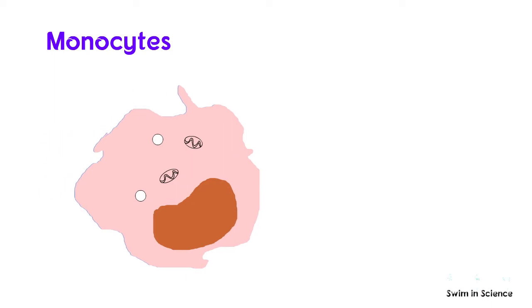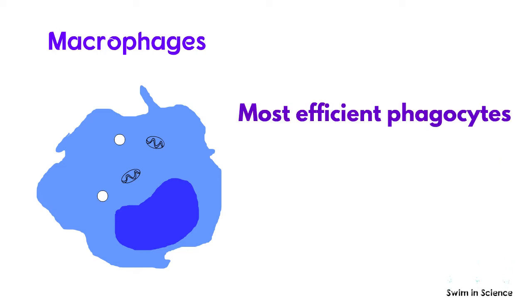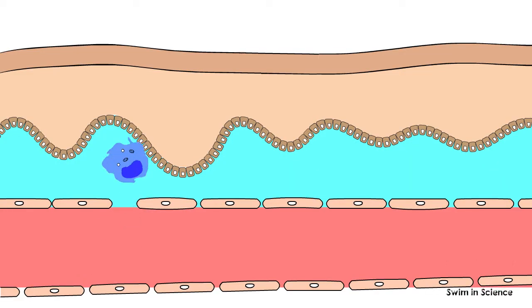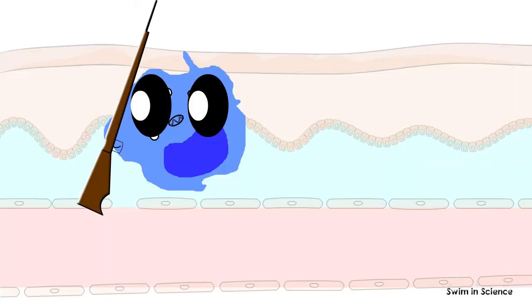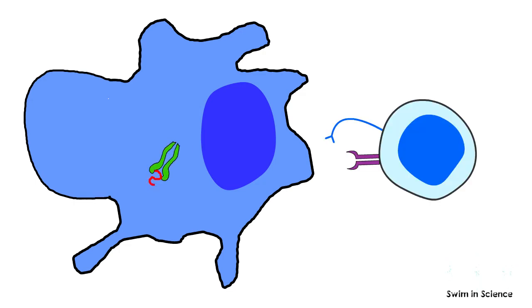Monocytes have a kidney-shaped nucleus. They differentiate into macrophages and dendritic cells to elicit an immune response. Macrophages are the most efficient phagocytes. They have a single nucleus. They leave the circulatory system by squeezing through the walls of capillary vessels and keep watching for pathogens or dead cells. Therefore, macrophages are the first line of defense of the innate immune system, eliminating a substantial number of targets. Macrophages engulf and process pathogens, cell debris, and cancer cells, and thereby also have a role in the activation of T cells via the mechanism of antigen presentation.